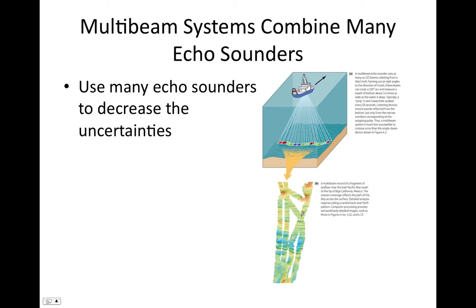As the ship moves forward, we can measure the depth of a path or swath. If we want to map a particular area of the seafloor, a ship with a multi-beam system can go on a cruise and sail back and forth in what's called 'mowing the lawn,' and map that part of the seafloor. Having multiple echo sounders rather than just one can help reduce uncertainties in the measurements.